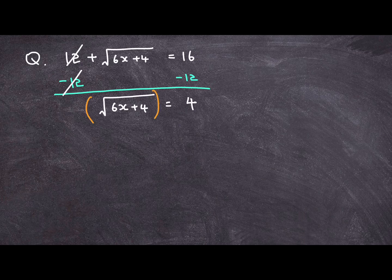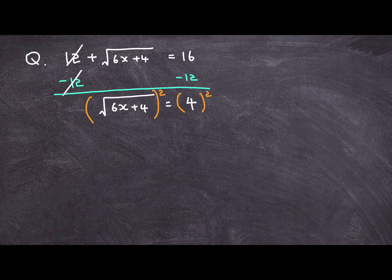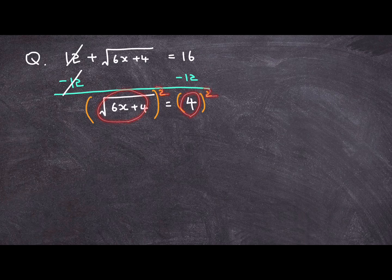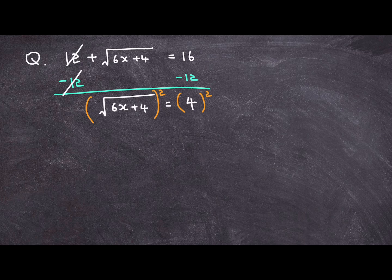You're squaring both sides of the equation. So the equal sign should not change. It should stay the same. It should still equal to each other even if you square both sides.